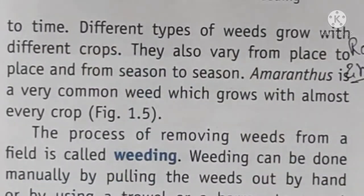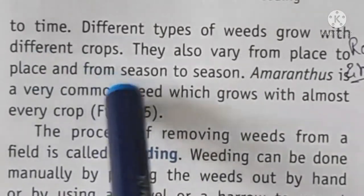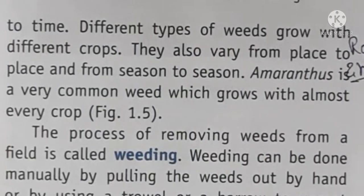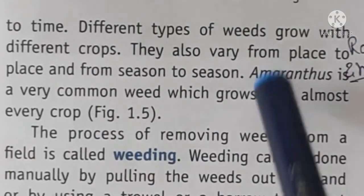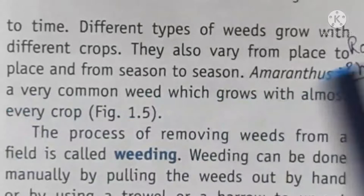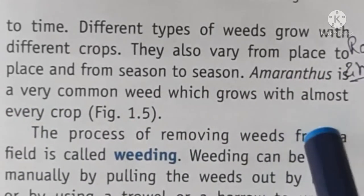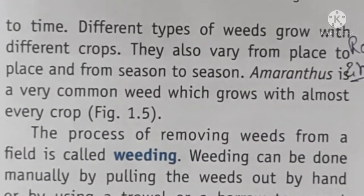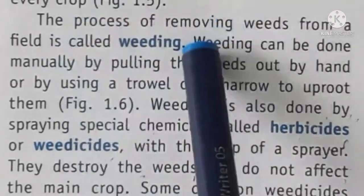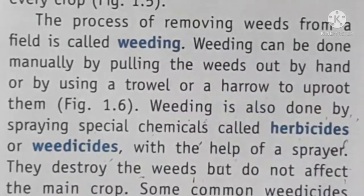Different types of weeds grow with different types of crops, and they can vary from place to place and from season to season, just like crops. For example, amaranthus is a weed that grows with many crops. The process of removing weeds from the field is called weeding.